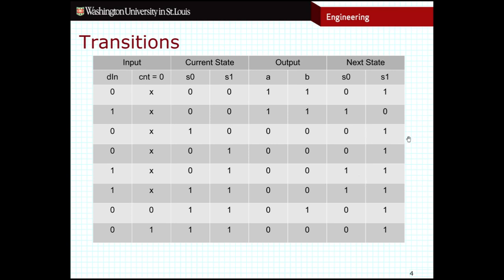And so just like we did before, we're going to construct equations for all of our outputs. So in this case, we need equations for A and B, as well as our next state, S0 and S1, as well as the other output that's not included on this table, which is the event output.